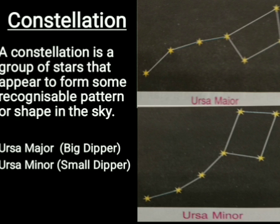Some other easily recognizable constellations are Orion, which is visible in winter; Ursa Minor or Small Dipper, which is visible in spring; and Cassiopeia, which is visible in autumn.